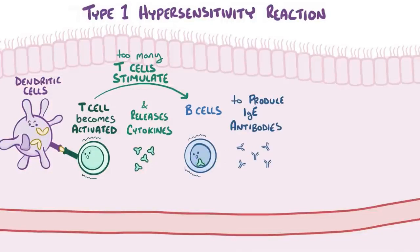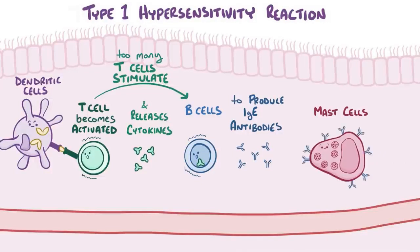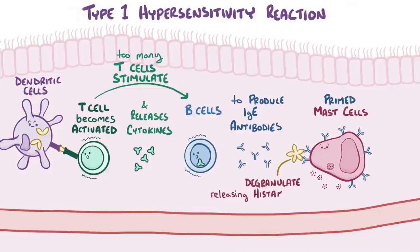Those IgE antibodies get released into the bloodstream and bind to mast cells, which are immune cells in the tissue that carry within themselves a load of histamine. Once bound by IgE, the mast cells are primed, meaning if pollen enters the body again in the future, those mast cells degranulate and release their histamine into the local tissue.